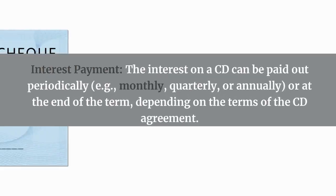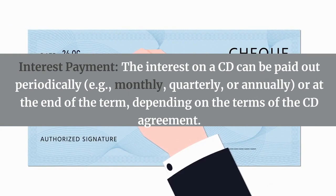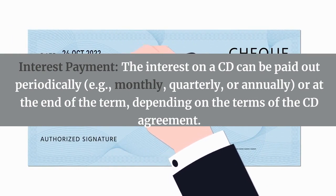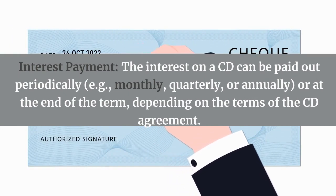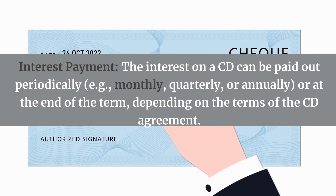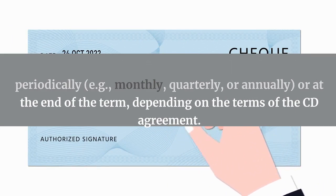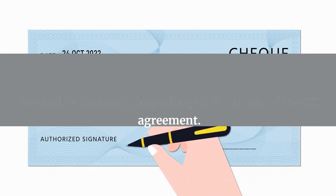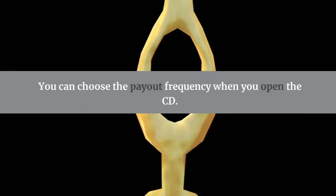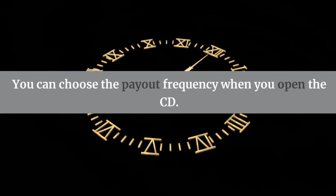Interest payment: the interest on a CD can be paid out periodically — for example, monthly, quarterly, or annually — or at the end of the term, depending on the terms of the CD agreement. You can choose the payout frequency when you open the CD.